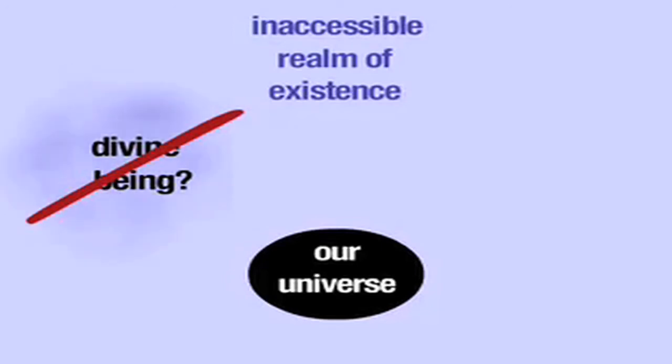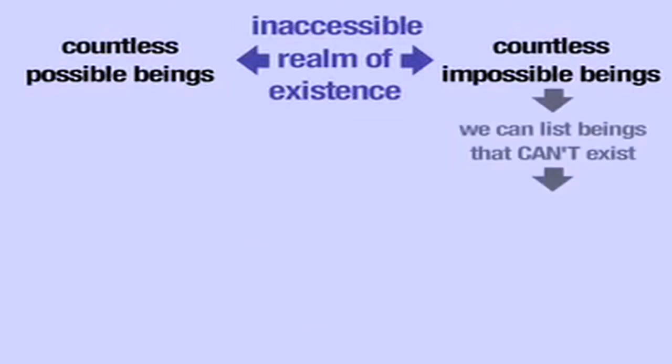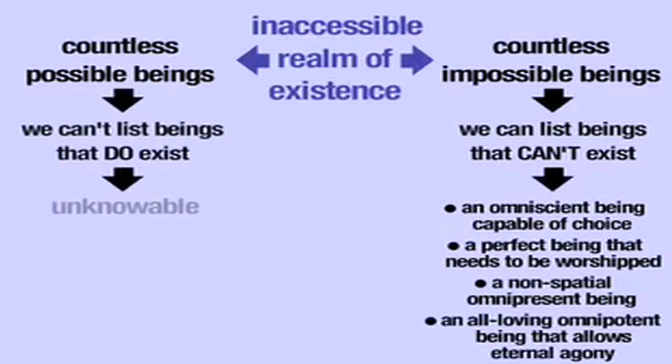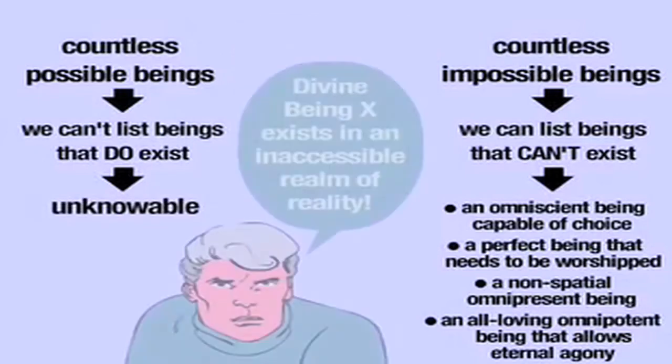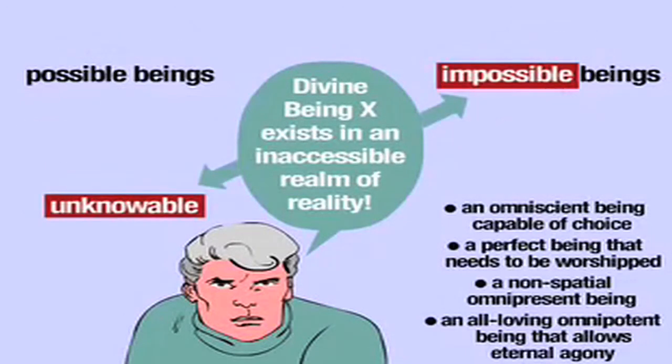No. There's the same asymmetry as before. Countless kinds of being might exist independently of our universe. Countless logically impossible beings cannot. But while we can list many kinds of being that can't exist there because they violate logic, we can't list those, if any, that do. Any attempt to argue that a specific divine being exists in an inaccessible realm of reality is an attempt to argue for either the impossible or the unknowable.